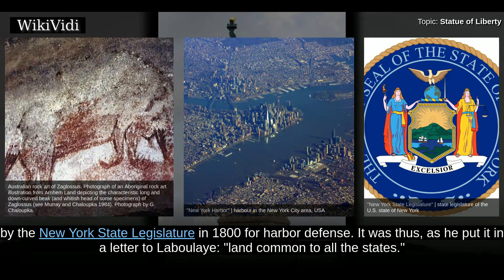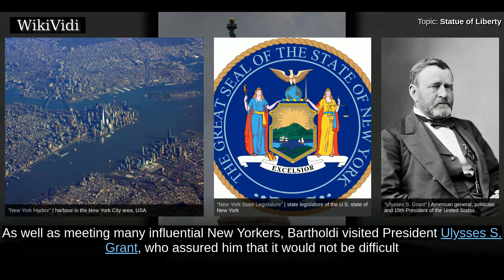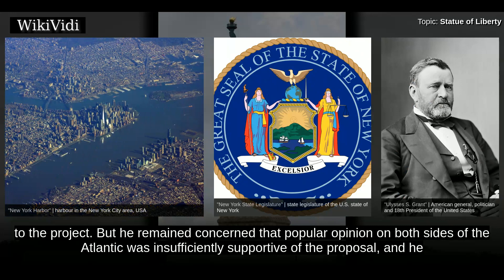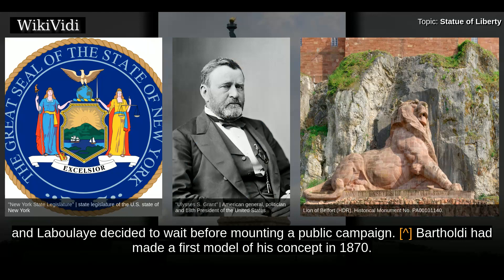It was thus, as he put it in a letter to Laboulaye, land common to all the states. As well as meeting many influential New Yorkers, Bartholdi visited President Ulysses S. Grant, who assured him that it would not be difficult to obtain the site for the statue. Bartholdi crossed the United States twice by rail and met many Americans who he thought would be sympathetic to the project. But he remained concerned that popular opinion on both sides of the Atlantic was insufficiently supportive of the proposal, and he and Laboulaye decided to wait before mounting a public campaign.